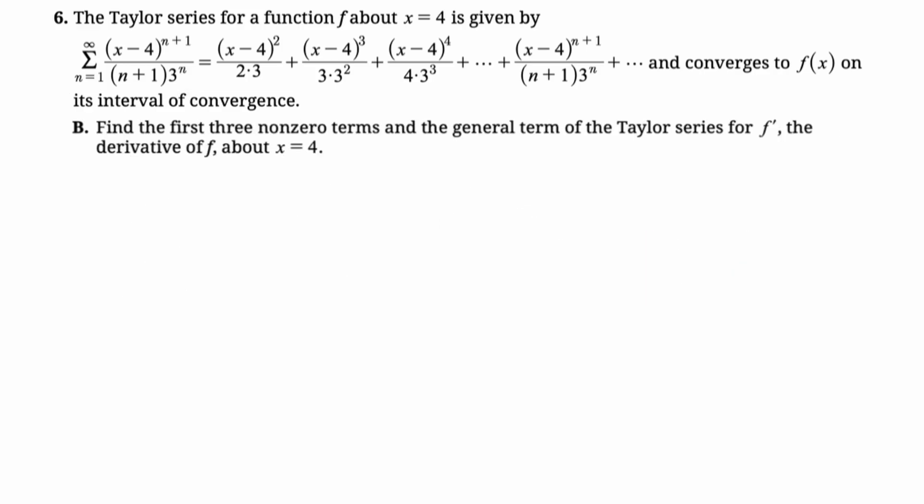Find the first three non-zero terms and the general term of the Taylor series for f prime, the derivative of f about x equals 4. All right, this is good because they're called power series, not literally for this reason, but basically because you just use the power rule on them or you reverse the power rule. So in this case, f prime of x is going to be equal to, look at that first term and just power rule it. Bring down the 2, cancel those 2s, you get x minus 4 over 3.